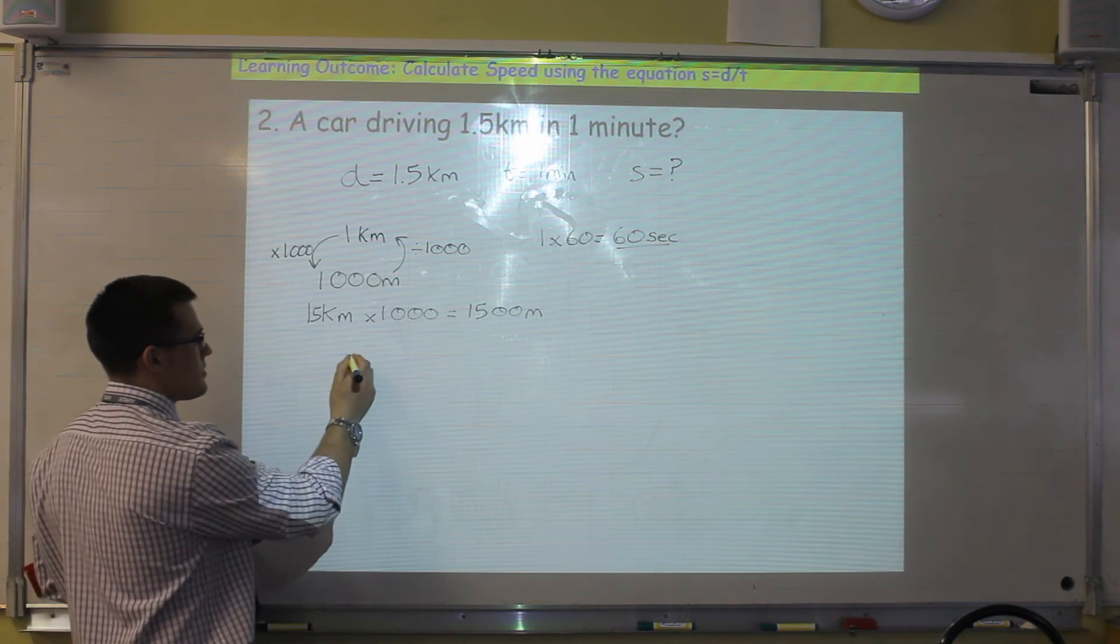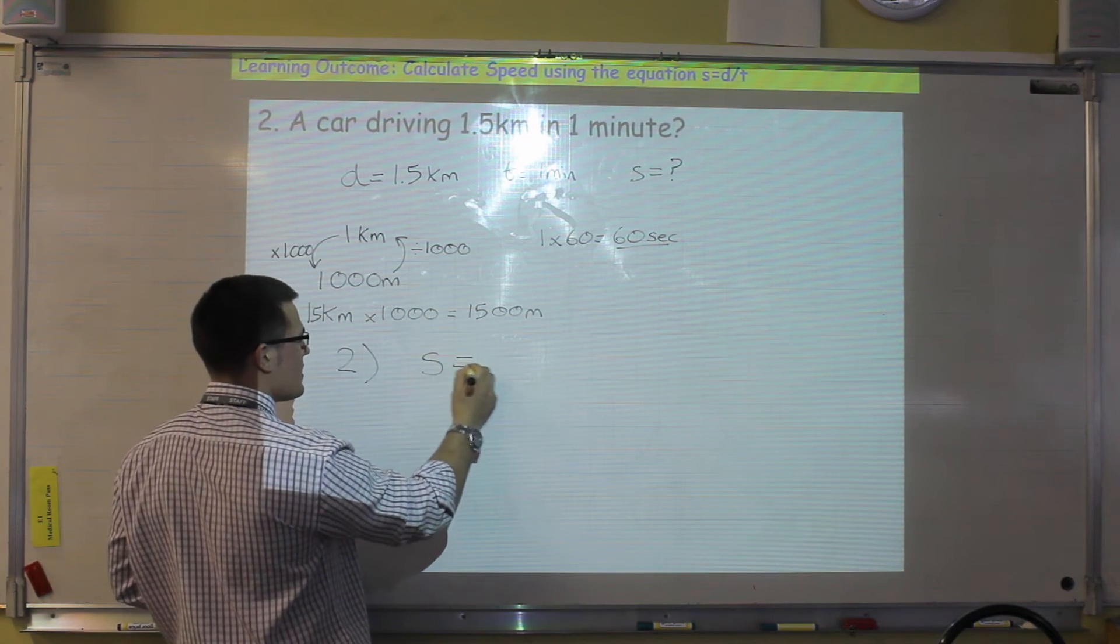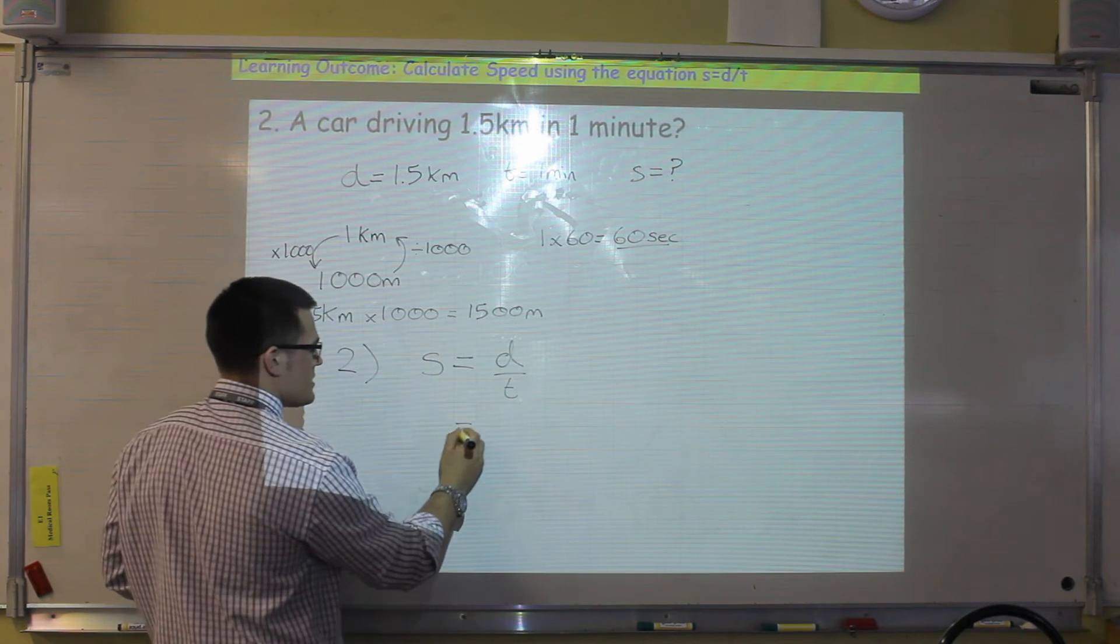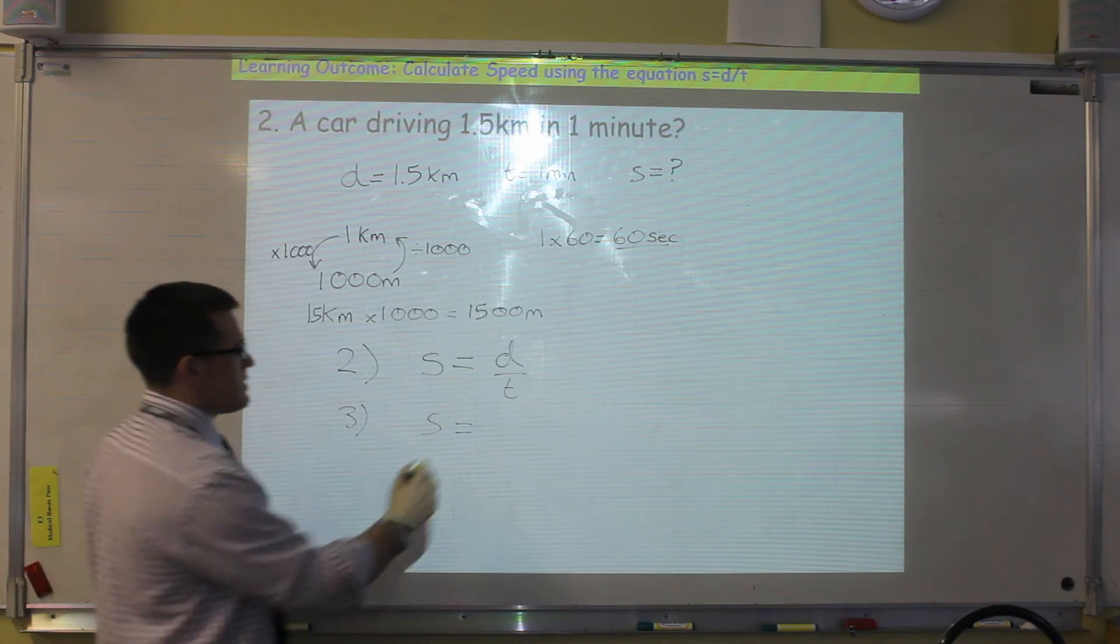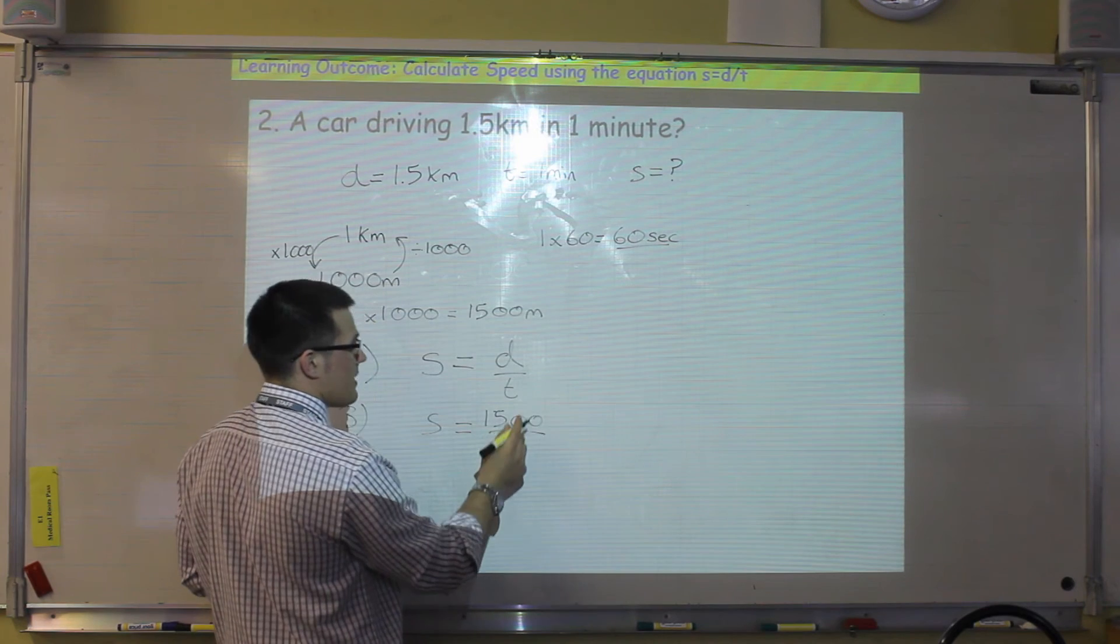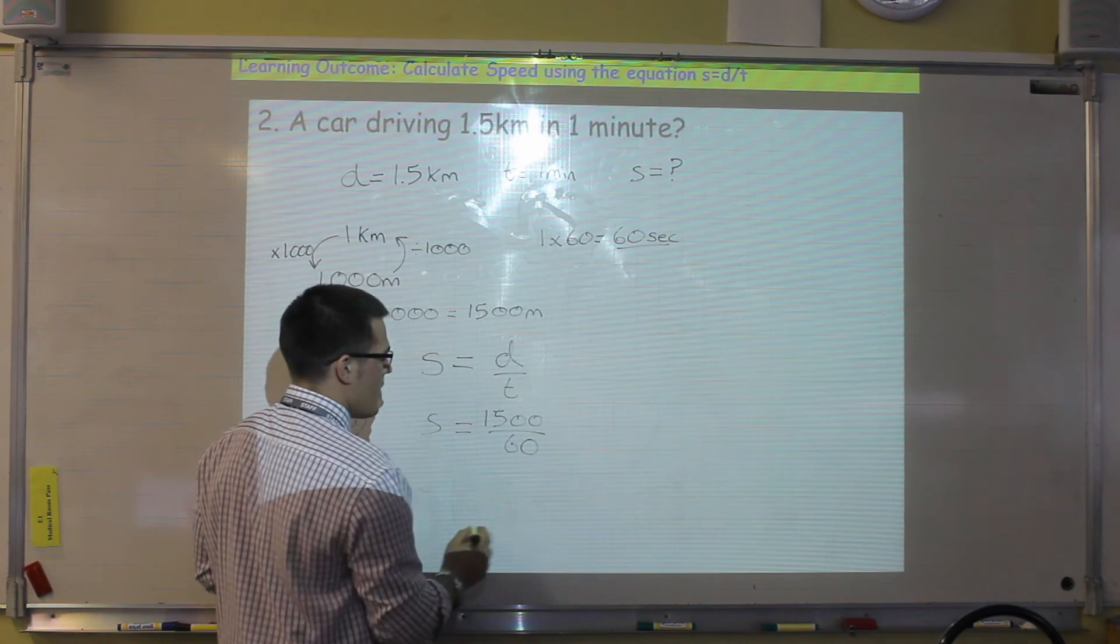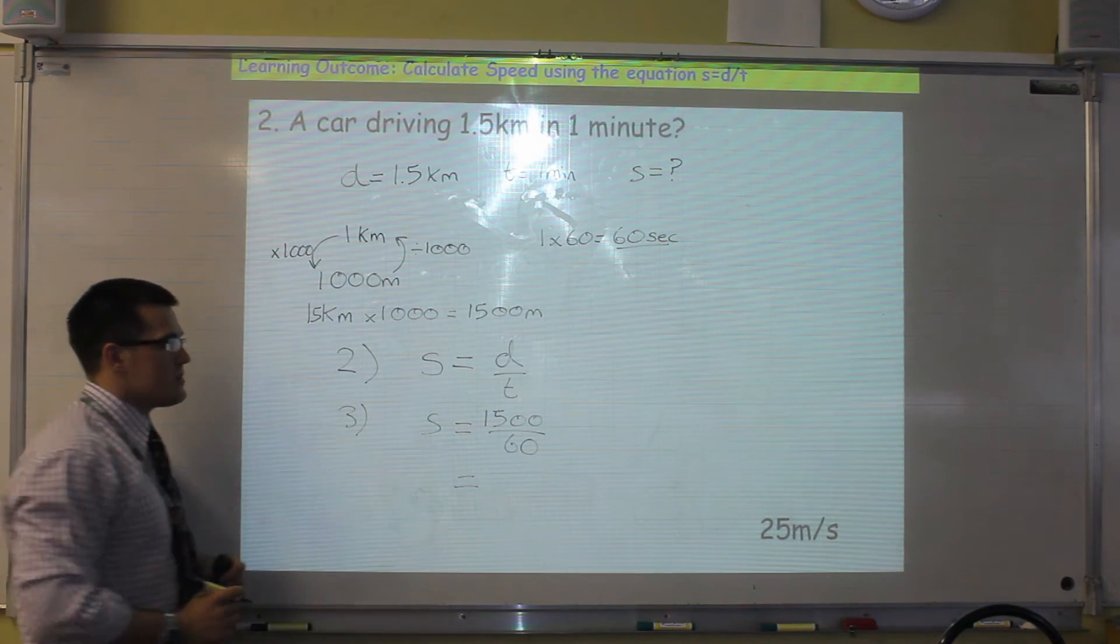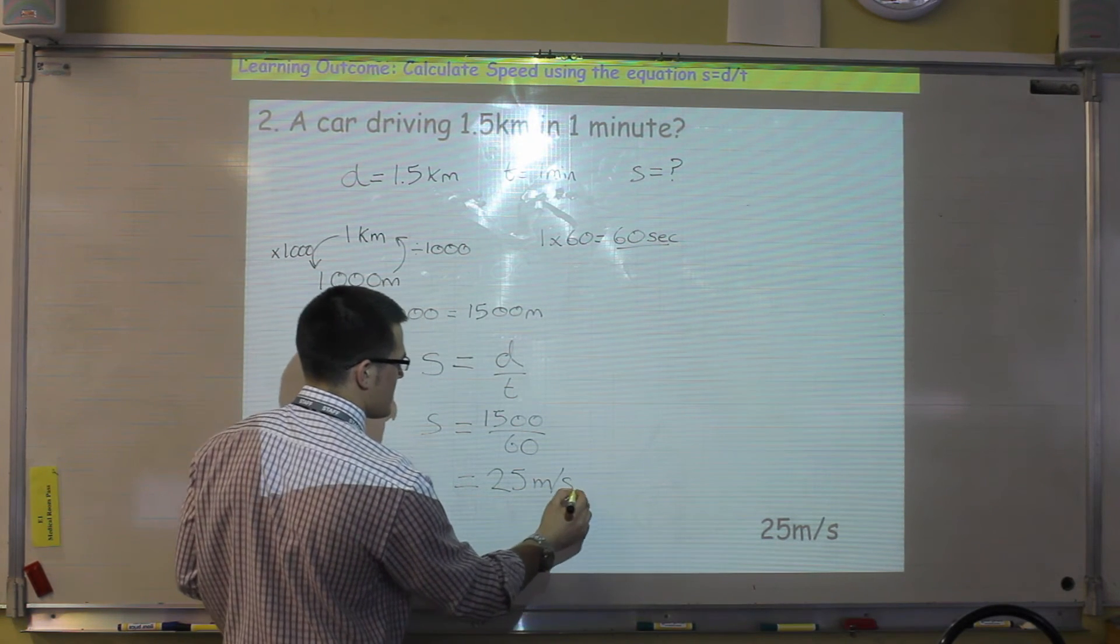So now we carry on exactly the same. So step number two, is we write our equation again. Speed is distance divided by time. Step number three, is we put our numbers in. So our distance is 1,500, and our time is sixty seconds. And we put that into our calculator, and work out the answer. Which for this particular question, is twenty-five meters per second.